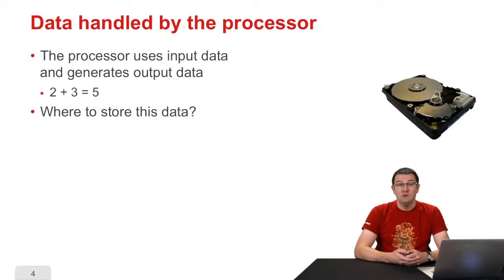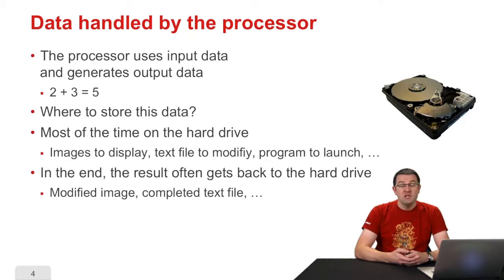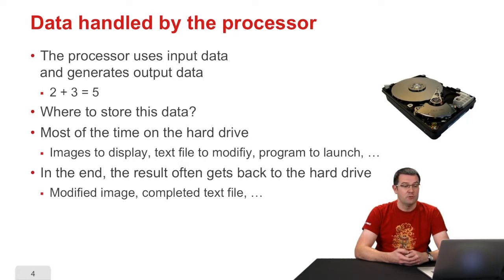When performing calculations, the processor manipulates data. It will have to perform operations with incoming data and produce an outgoing result. If you ask it to add 2 and 3, it's going to search for 2 and 3 in the memory, and write the result, 5, in the memory. Where is that data stored? Generally, when launching a program, the data are stored on the hard drive — for example, an image you want to display on the screen, some text you want to modify, or a program you want to launch that needs to be loaded and executed in the processor.